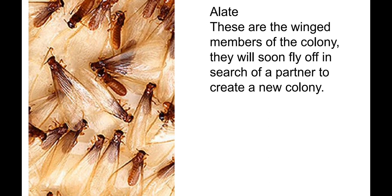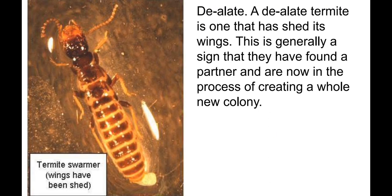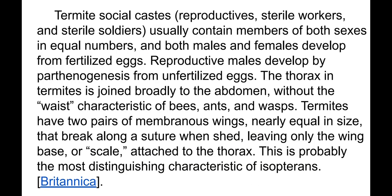Alates are the winged members of the colony that will soon fly off in search of a partner to create a new colony. A dealate termite is one that has shed its wings — generally a sign that they have found a partner and are now in the process of creating a whole new colony. Dealate termite social castes — reproductives, sterile workers, and sterile soldiers — usually contain members of both sexes in equal numbers, and both males and females develop from fertilized eggs.